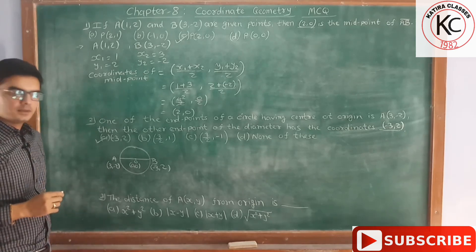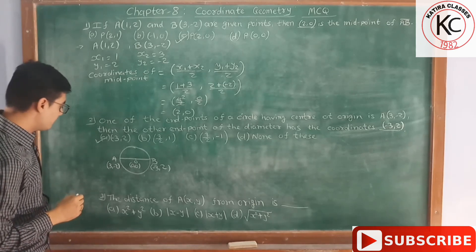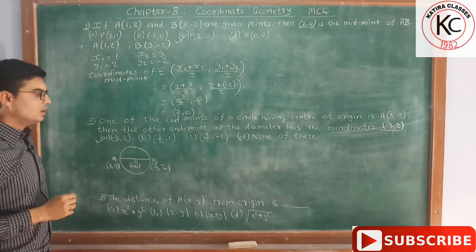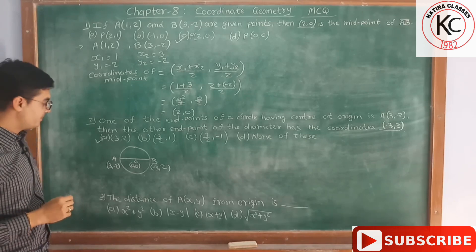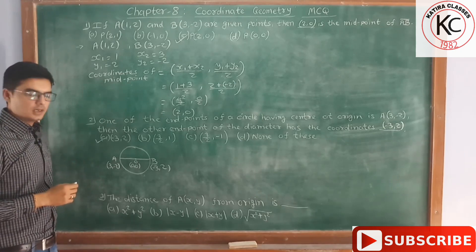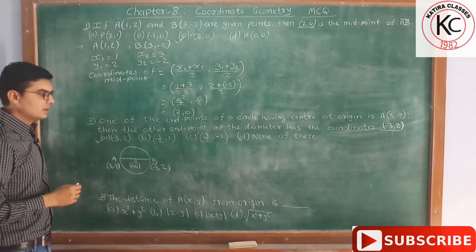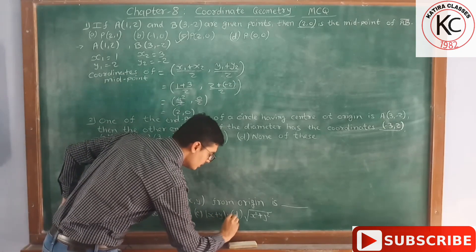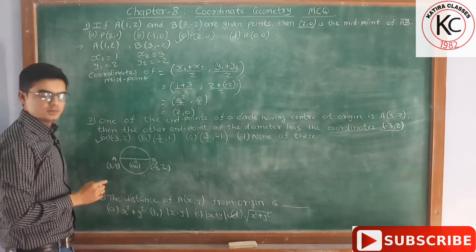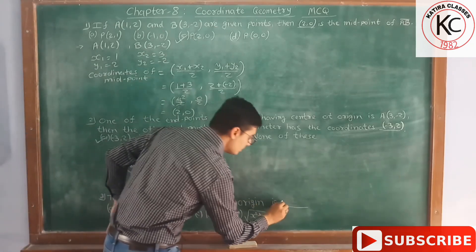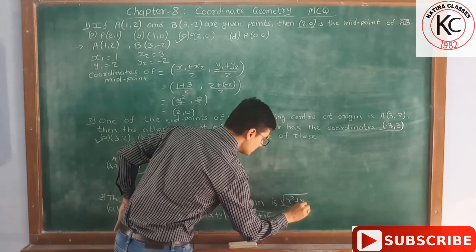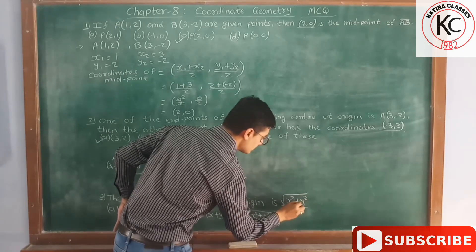Now the third MCQ: the distance of point A from the origin is dash. Friends, this is the most important MCQ and the answer is option D. You have to remember this formula: √(x² + y²).